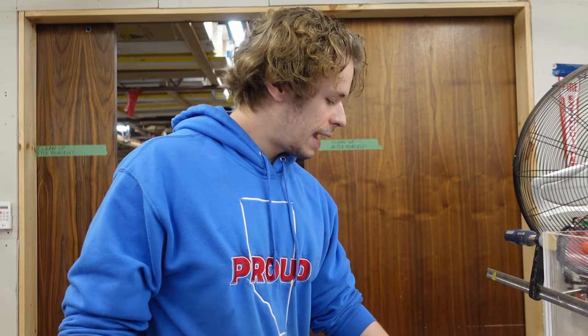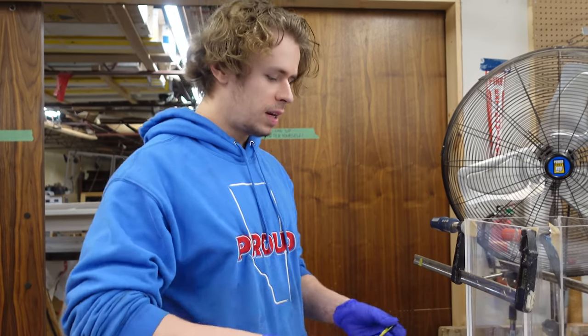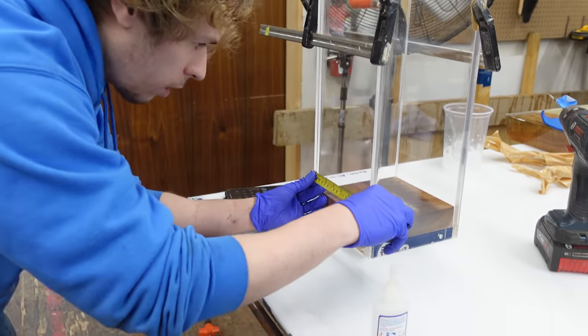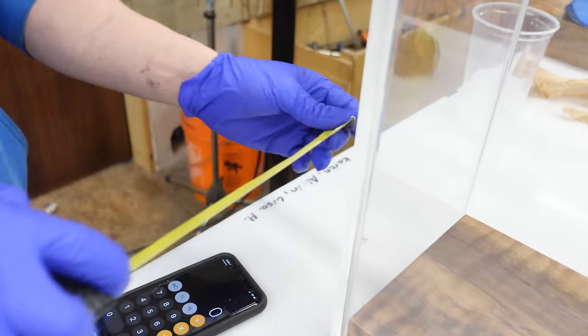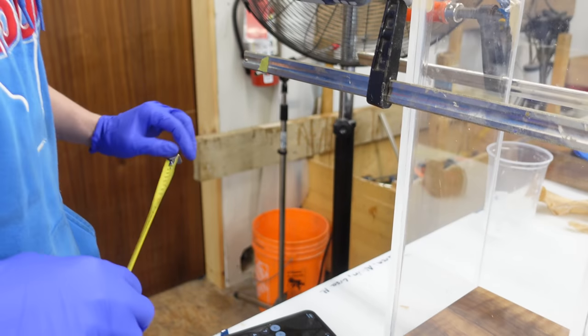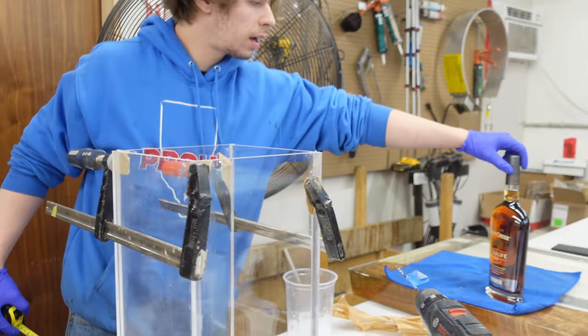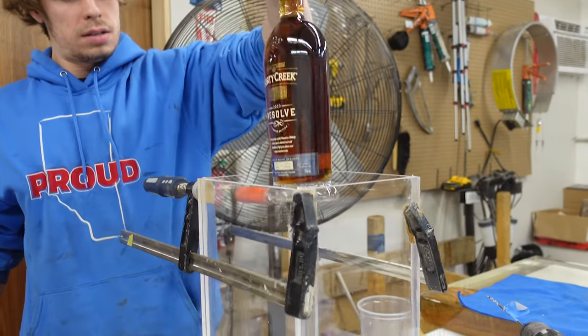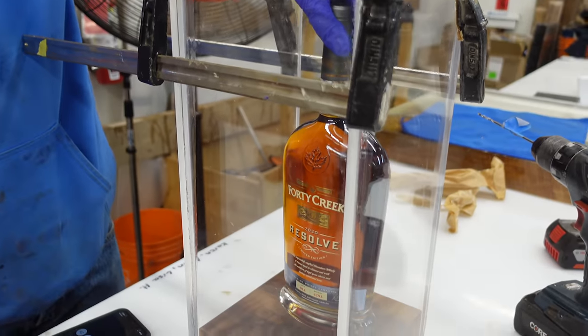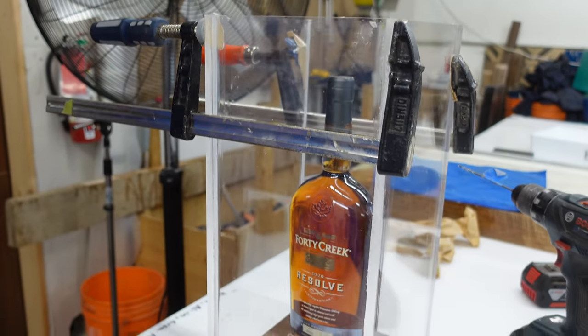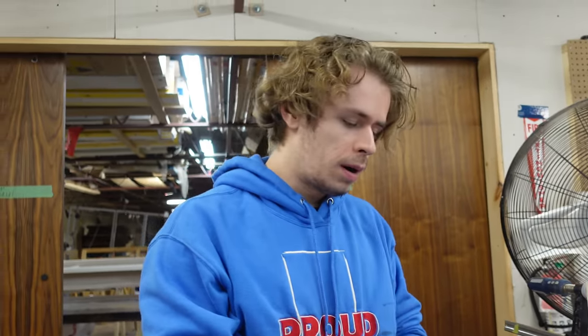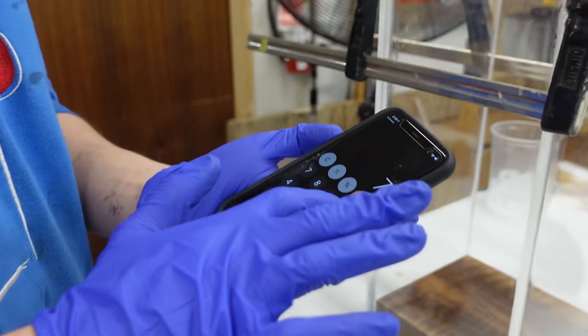We're going to try and calculate how much resin we need for this thing. We are seven inches that way, seven inches that way, and then our height—I should check to see how high this is going to go. We want to go a bit above. We'll go like 14.5, and then that's a 750ml bottle.